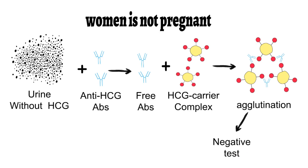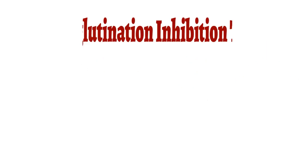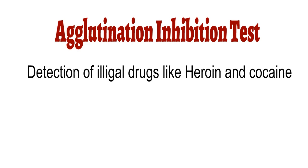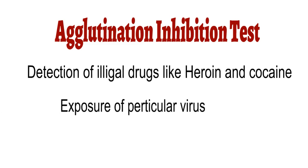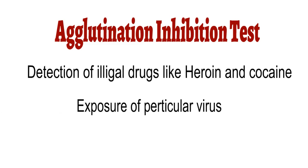These are reverse kinds of results: if you cannot see agglutination, that is the positive test; if agglutination appears at the end of the test, it is a negative test. In this way, the presence of small antigens can be detected using the agglutination inhibition test. The test is also used to detect illegal drugs like heroin and cocaine in a person's body, and to check whether a person was exposed to a particular virus.